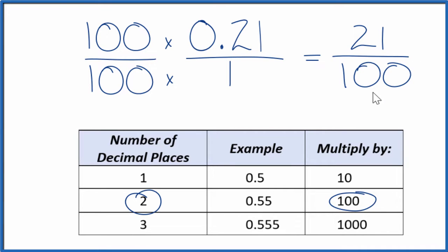So now we have our fraction, and we can't reduce this fraction any further. It's in simplest form. So when we convert 0.21, the decimal, to a fraction, we get 21 over 100. If you divide 21 by 100, you'll get 0.21.